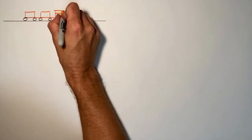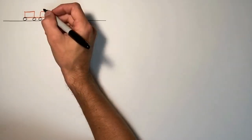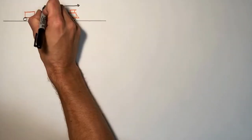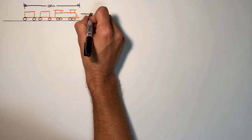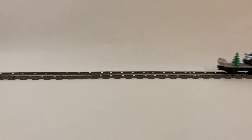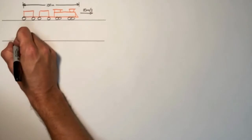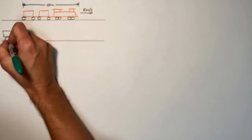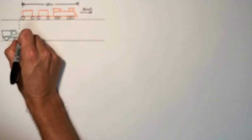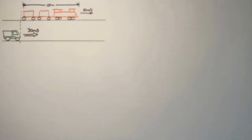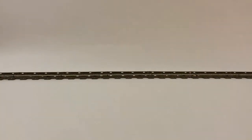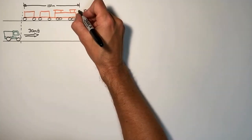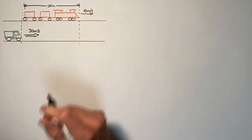Now let's start with a train that is 100 meters long, traveling forward at 10 meters per second. Driving down the road alongside the train is a truck traveling forward at 30 meters per second. What we're trying to find in this problem is the total time it takes for the truck to pass the train.